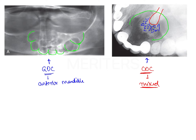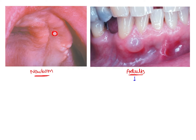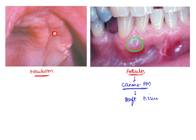It is a mixed radiolucent-radiopaque lesion. Next, the gingival cyst of newborns is shown in the first picture, and the second shows the gingival cyst of adults. The gingival cyst of adults has a predilection for the canine-premolar region, similar to the lateral periodontal cyst. Importantly, the gingival cyst of adults does not produce any radiographic changes, and therefore it is considered the soft tissue counterpart of the lateral periodontal cyst.